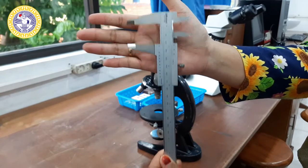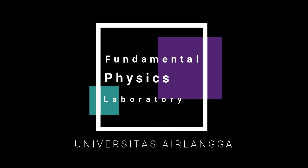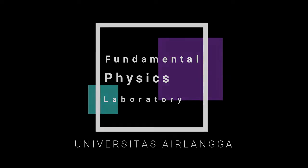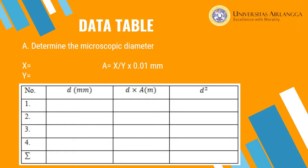I remind you that in the last semester you have learned how to read the caliper. For this process, you have to measure four or more data points. After that, put your result in the worksheet. This is the sample of the worksheet for the first process to determine the microscopic diameter. You can write four data points or more and then place them in the worksheet.